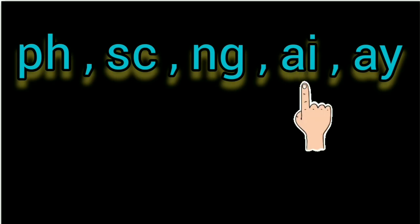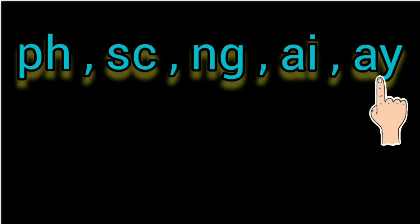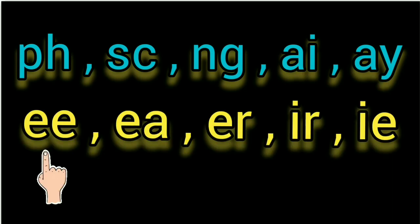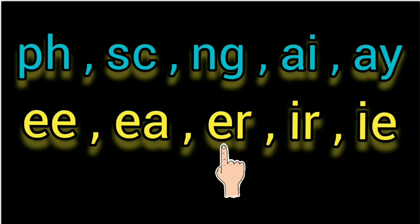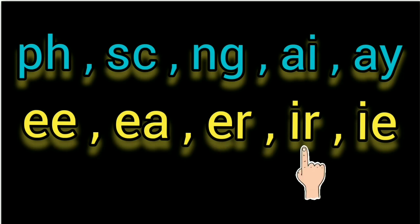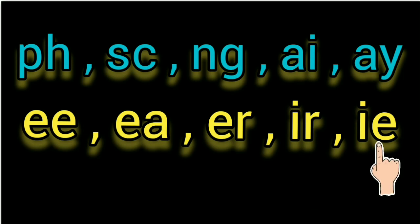AI — this pattern says the A sound as in aid. AY — A as in day. EE — this pattern says EE as in bee. EA — this pattern says EE as in tea. ER — this pattern says ER as in her. IR — this pattern says ER as in ear.